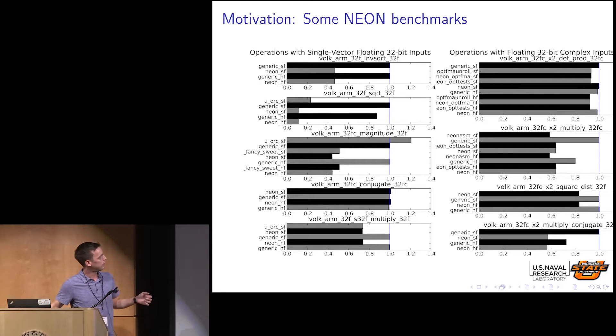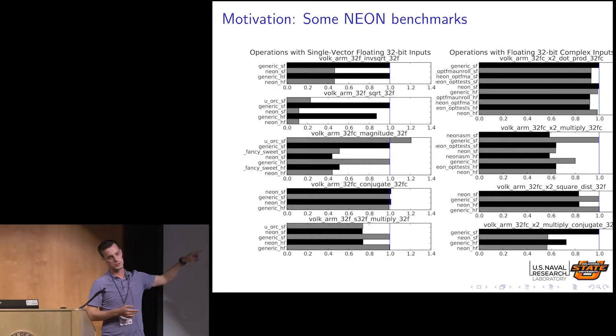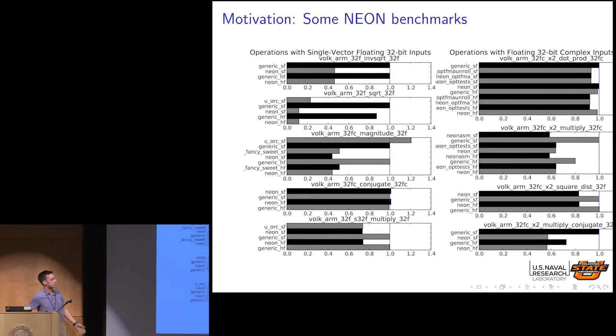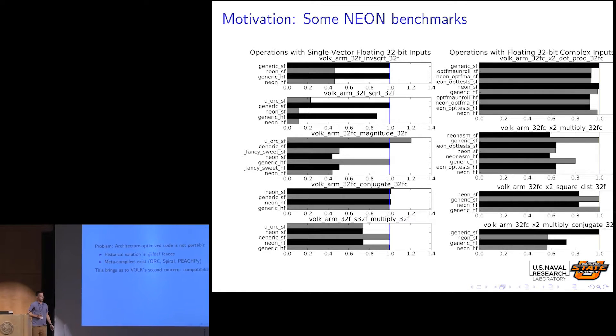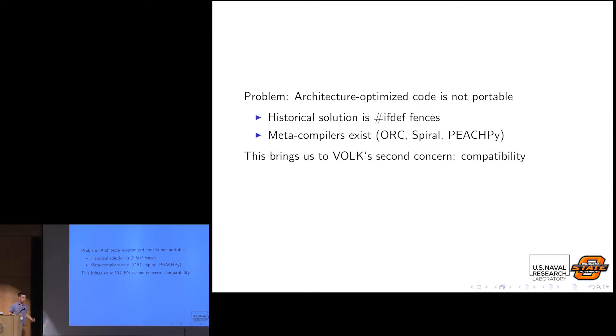There are a couple of ways of fixing that. One is you can have these if-defenses where you say: if we're on ARM, do this thing; if we're on x86, do this thing — but that gets a little unwieldy. The other option is meta-compilers that introduce another language more streamlined for SIMD. One we have support for in VOLK is called ORC, and the reason I like this benchmark is because writing your implementation in that other language doesn't actually mean it's going to be faster — the magnitude benchmark is an example of that. VOLK sort of takes care of that for you, with if-defenses nicely handled in the build system.